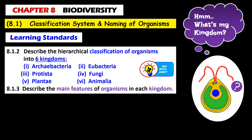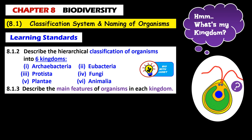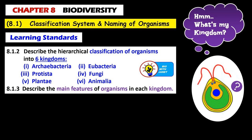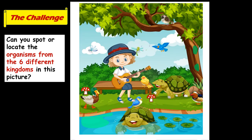Our learning standards are as follows. Firstly, we should be able to describe the hierarchical classification of organisms into six kingdoms: archaebacteria, eubacteria, protista, fungi, plantae, and animalia. Then we should be able to describe the main features of the organisms in each of these kingdoms. Can you spot or locate the organisms from the six different kingdoms in this one picture? At the end of the video, we'll find out where these organisms are.